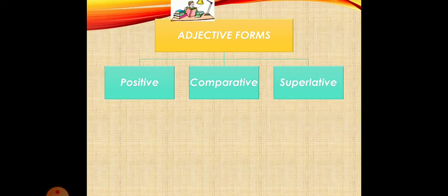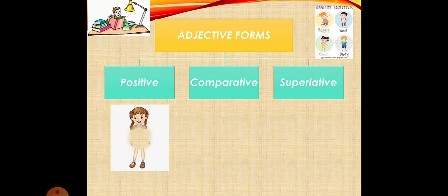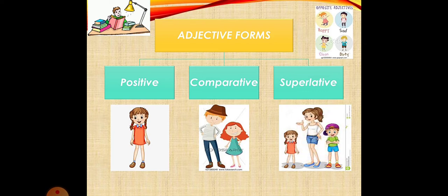In positive degree, we compare only one person. It means there is no need of any comparison because we are talking about only one. So I'll say Rohan is tall. I'm talking about only one person.